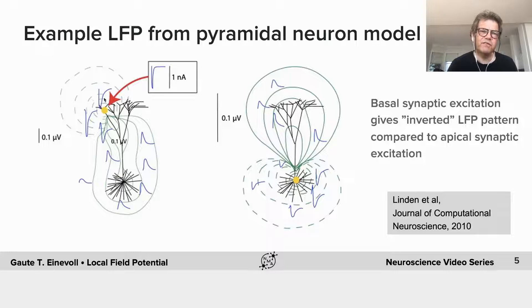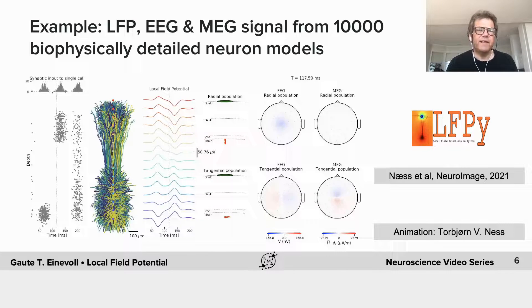So you can have strong synaptic input, many synapses onto the neuron that drives it to fire rapidly, but they can be placed such that the LFP that is set up is not very strong.